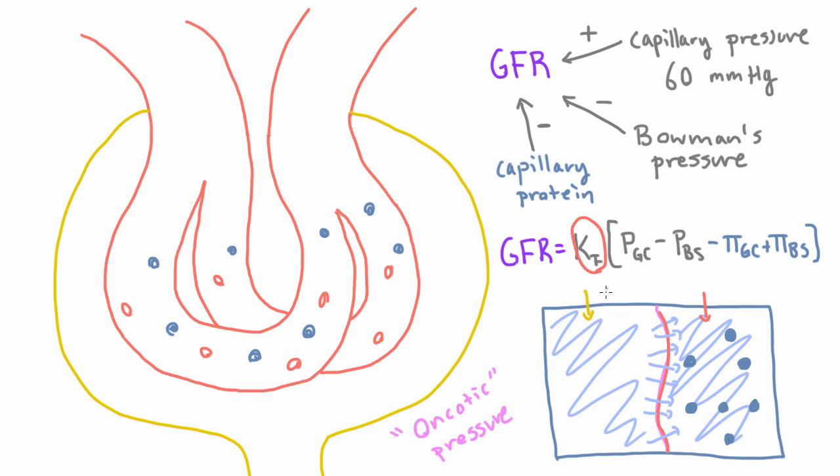Now what is this little constant here, this KF? Well, this contains all the other factors that would be important. And mainly this tells you kind of how much total capillary surface area you have. So if you had more glomeruli, you would have more total capillary surface area. So if you had, for example, twice as many glomeruli, this constant would get twice as big because you would expect that GFR would be twice as big. If you had twice as many glomeruli, you would filter twice as much fluid.